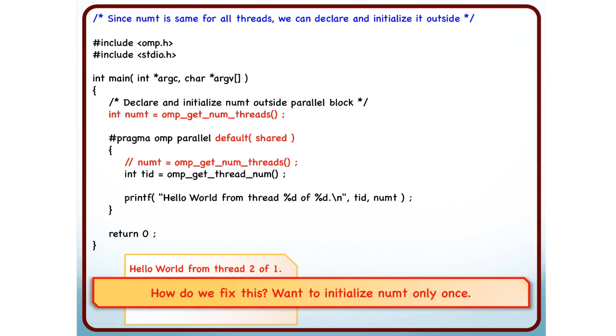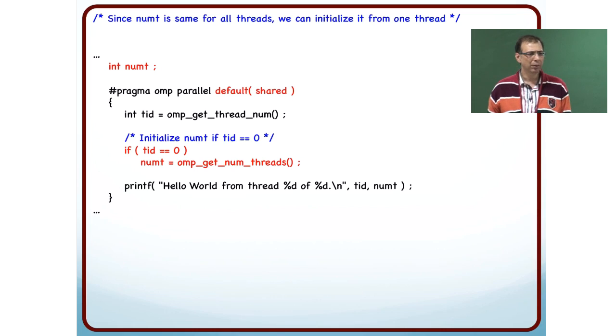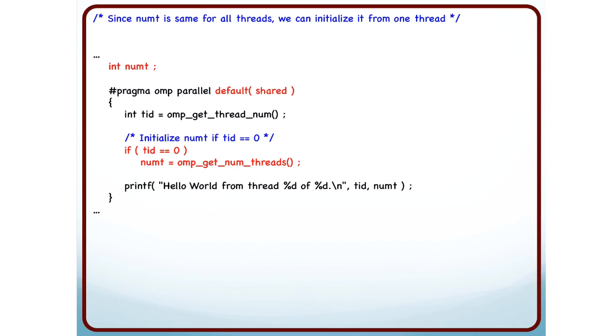Here is another way of trying to achieve that. Maybe I can just invoke it from one thread. Maybe one thread can make a call to OMP get num threads. Why do I need to have all the threads making the call? So I insert this code. First I make a call to OMP get thread num from each thread. I fetch the value into TID. And now the thread which has TID equal to 0, I ask it to initialize OMP get num threads. So only one thread will make a call to OMP get num threads. And then everybody prints hello world from thread percent D of percent D.